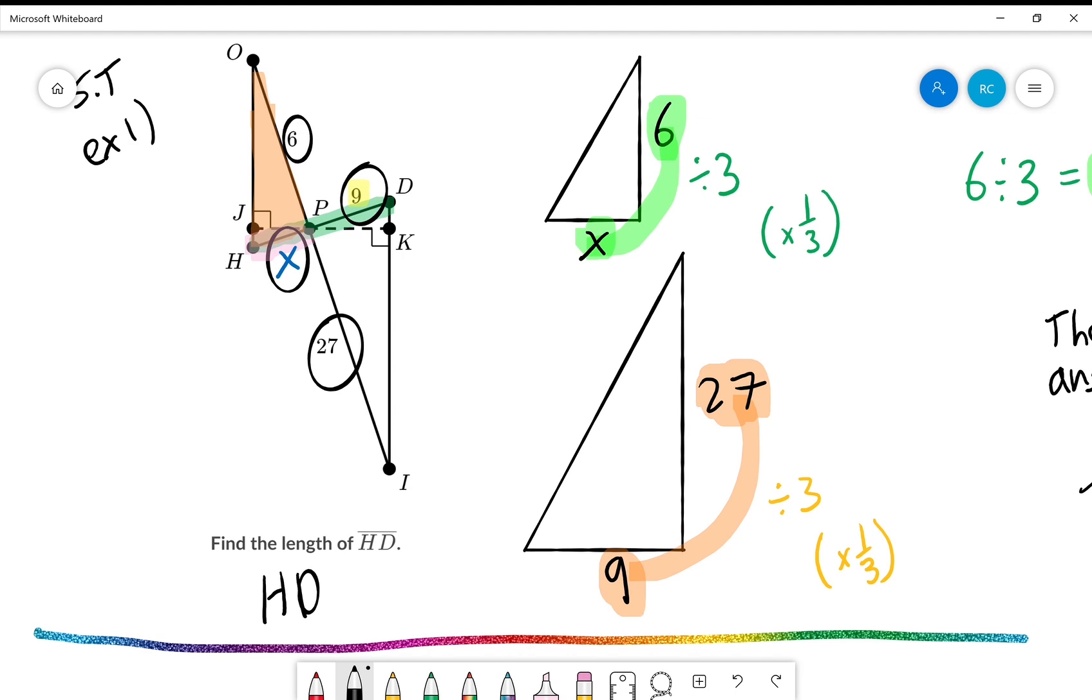Remember, when I don't put a segment bar up here, it means the distance between H and D, the numerical distance. It's not talking about the line segment. It's talking about the distance between those two points. And that equals 11.